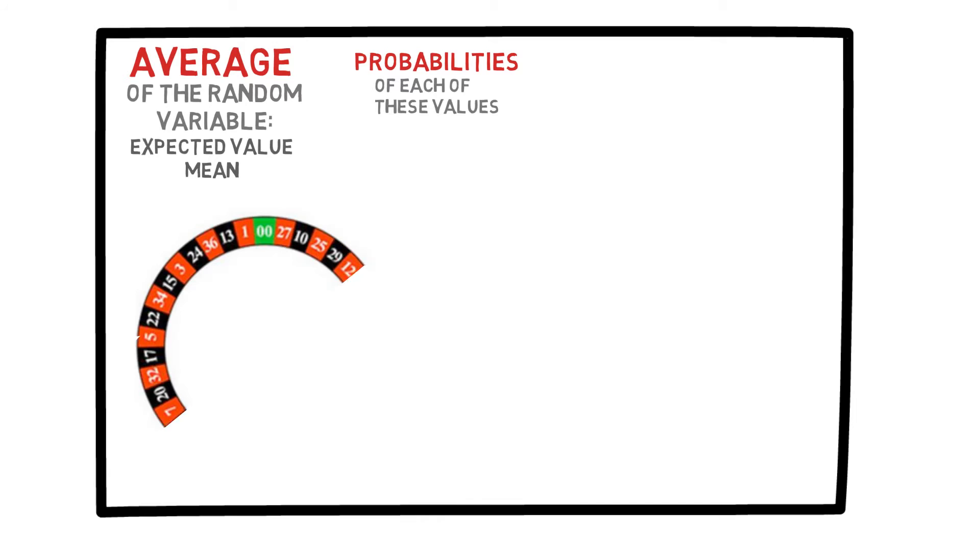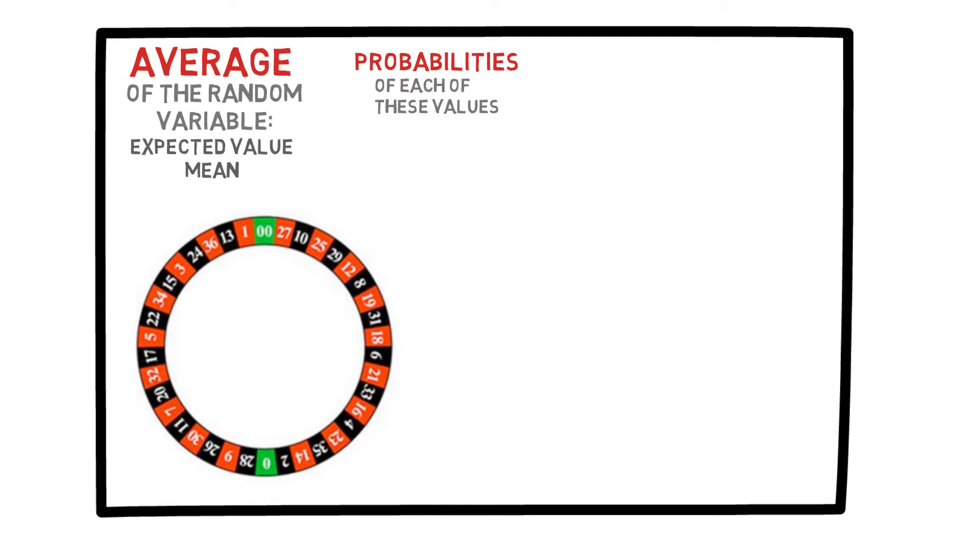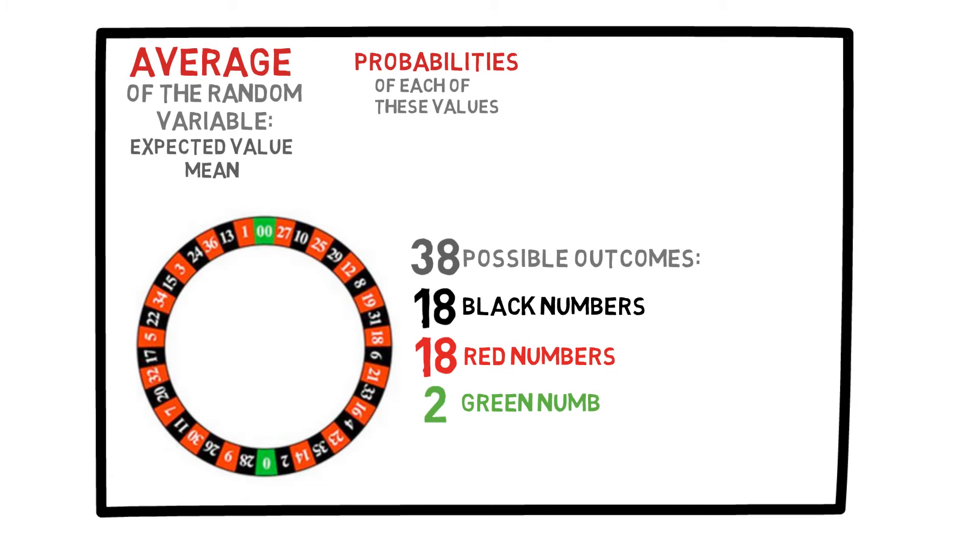Let's revisit the American roulette wheel. Here, we have 38 possible outcomes, 18 black numbers, 18 red numbers, and 2 greens. Suppose you bet $1 on black, so we can define the random variable x as your profit in this game.